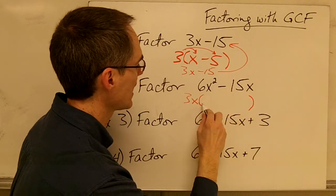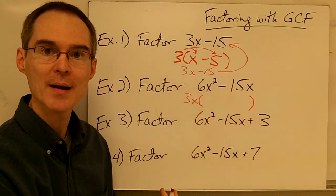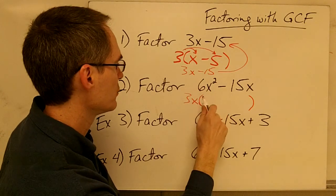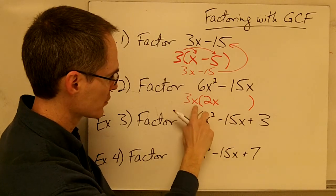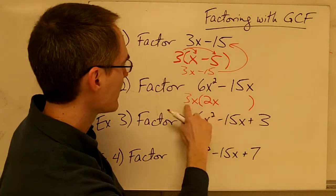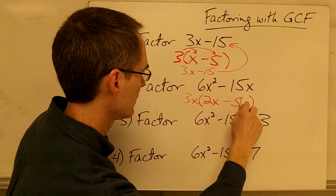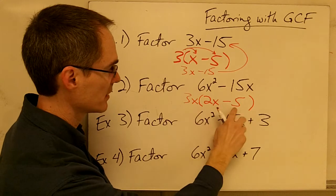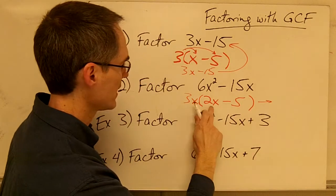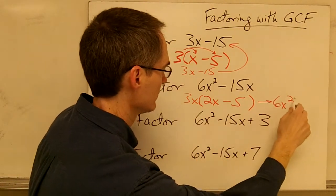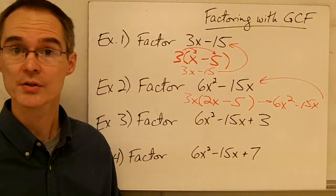Once I know that 3x is my greatest common factor, I just want to ask myself what's going to be left over from each term when I pull out my 3x. If I pull out 3x from the first term, I'm going to be left with 2x, because 3x times 2x gives me 6x squared. And if I pull out 3x from the second term, I'm going to be left with negative 5, because 3x times negative 5 gives me negative 15x. I can use the distributive property to check: 3x times 2x is 6x squared, 3x times negative 5 is negative 15x — which is what I started with.